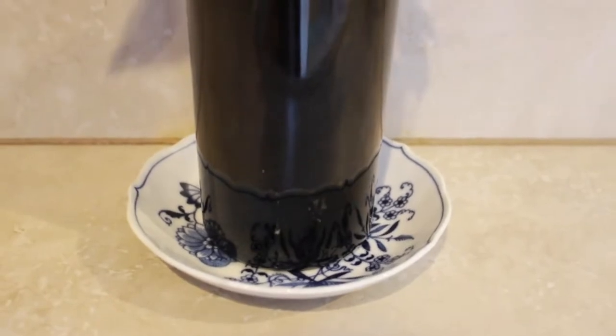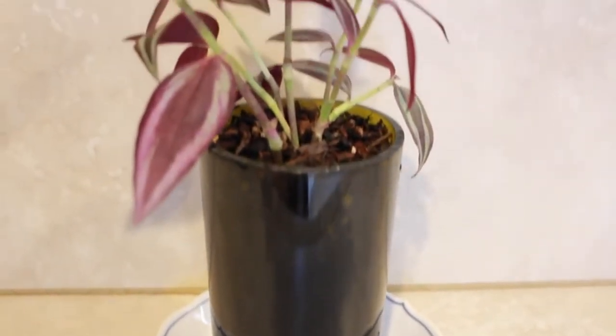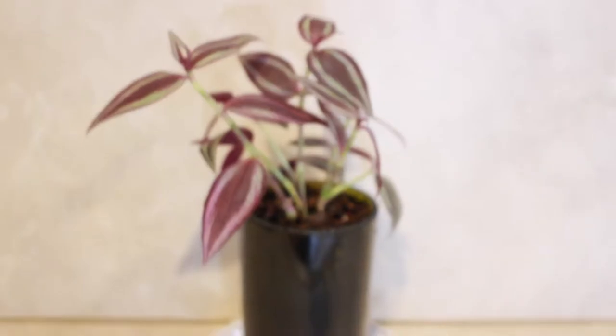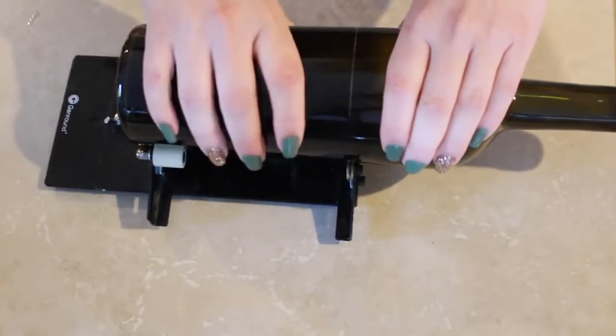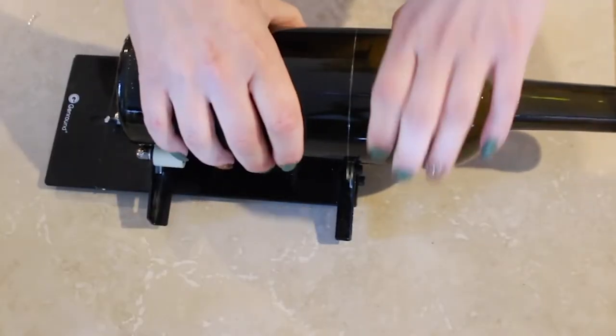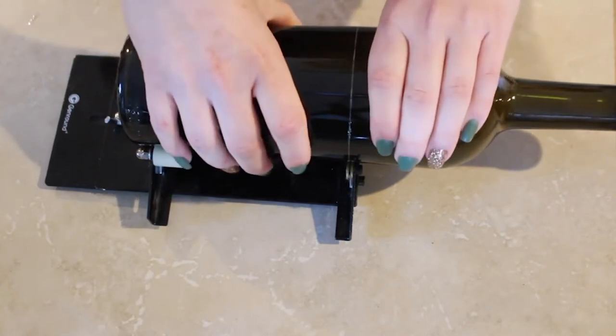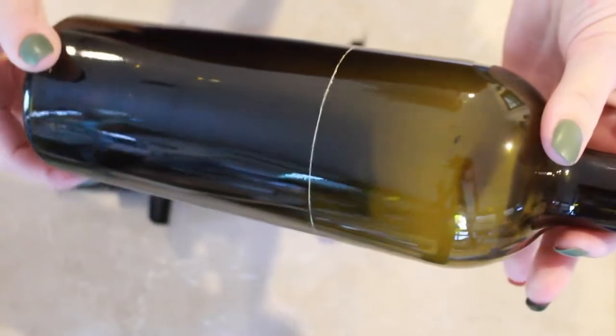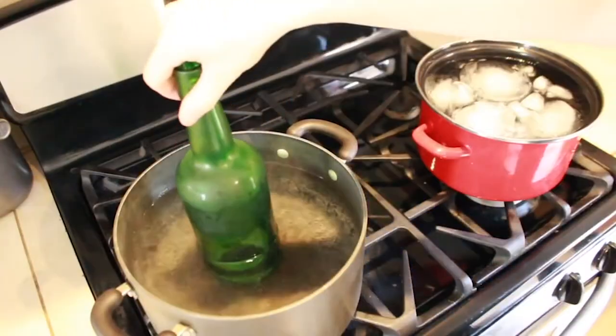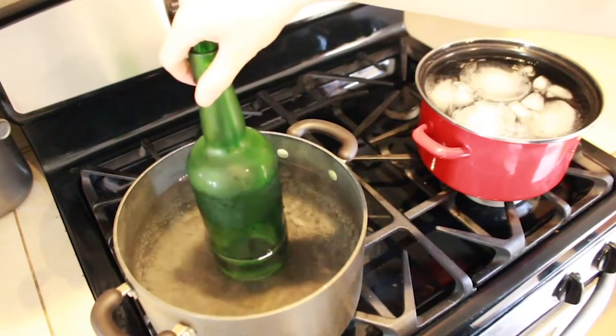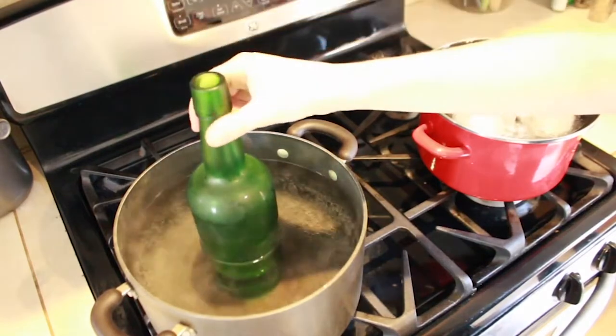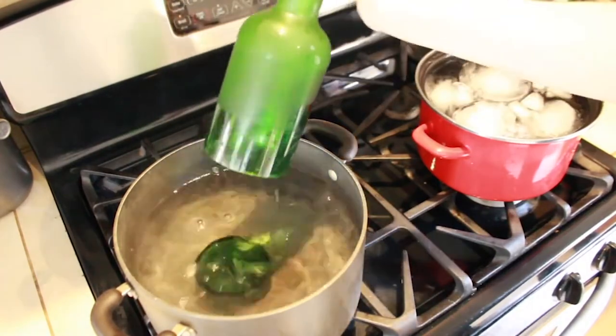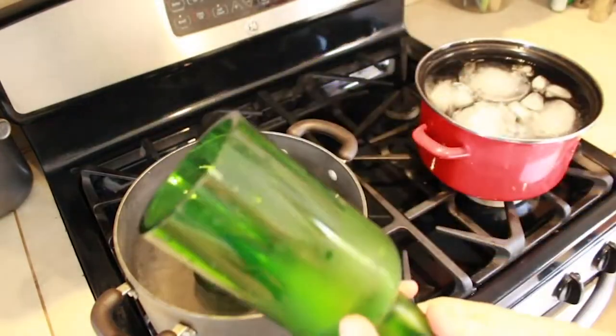Our third project for today is a planter using a wine bottle. So again, in this one, we are going to be starting by scoring our wine bottle with our scoring tool and then alternating in the hot and cold water. That is the method that I have found just works the best and is the most consistent for me. If you have another method that works good for you, leave it down in the comments below and let me know and I'll be sure to try it. So this footage was actually from a different project and as you can see, it's not the same wine bottle, but it is the same method either way.